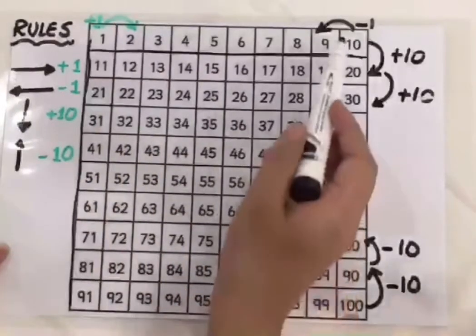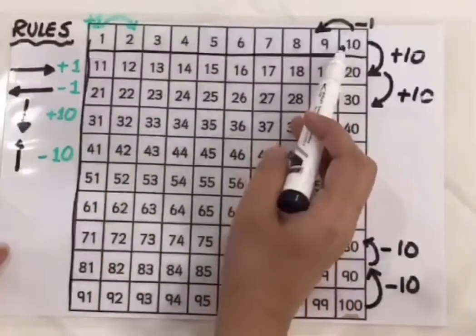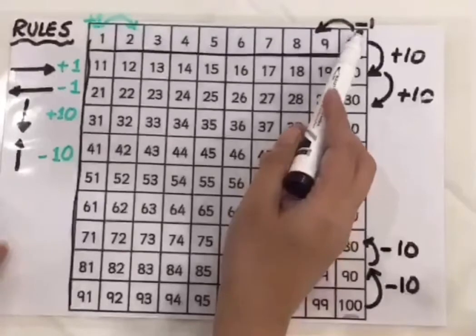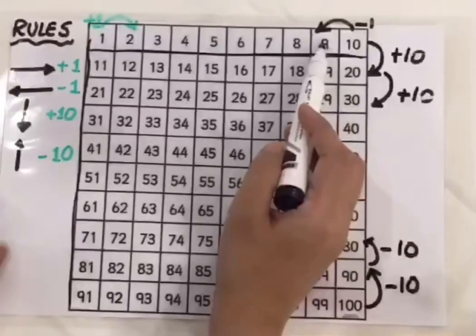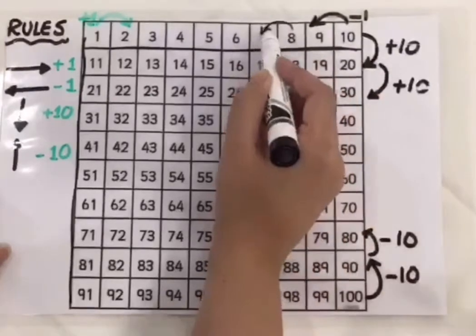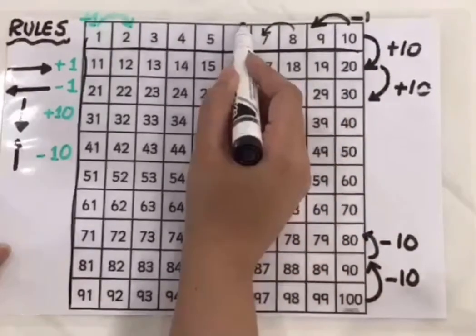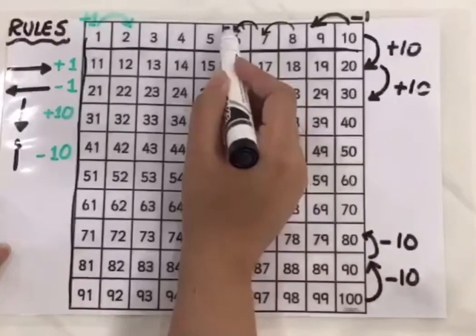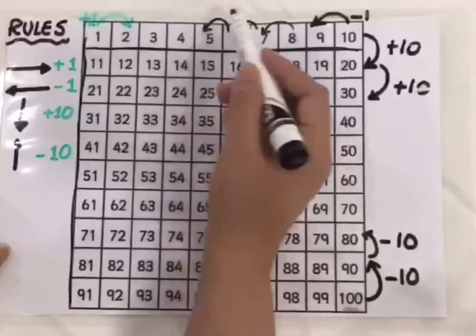And if I move from right to left, that will be opposite. So instead of adding, I am going to subtract 1. That is 10 minus 1, that is 9, 9 minus 1 is 8, 8 minus 1 is 7, 7 minus 1 is 6, 6 minus 1 is 5 and so on.